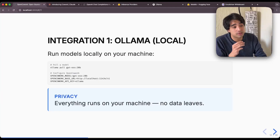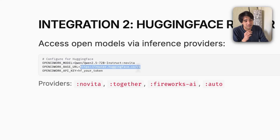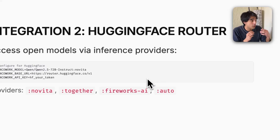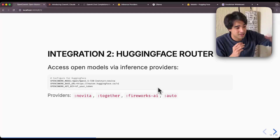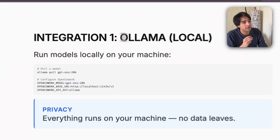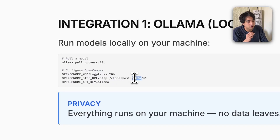We're going to be using both OLAMA and Hugging Face inference providers using the Hugging Face router. All you need to do for both of them is change the base URL. For Hugging Face, it's router.huggingface.co/v1, which will automatically route you to the model you want. Note that if you're using Hugging Face inference providers, your data will go to those inference providers — if you want this to be completely local, you would have to run this in OLAMA. A cool thing about OLAMA is that it runs a local server, so all you have to do is change the base URL to localhost and the port where you're running OLAMA slash v1, and it will just work.